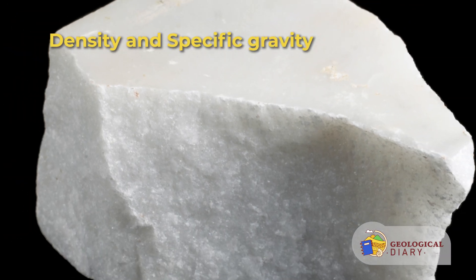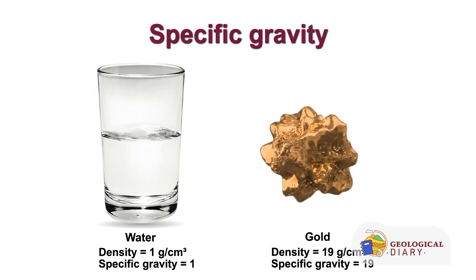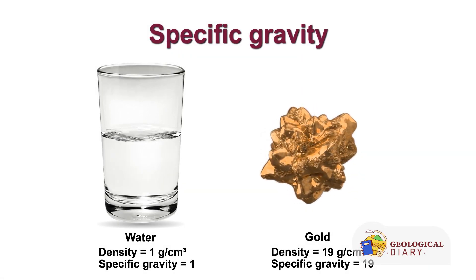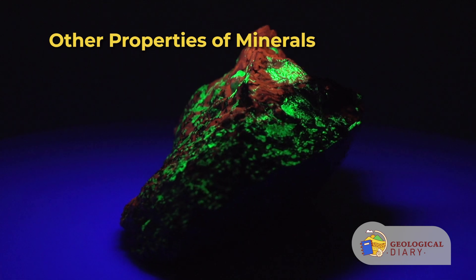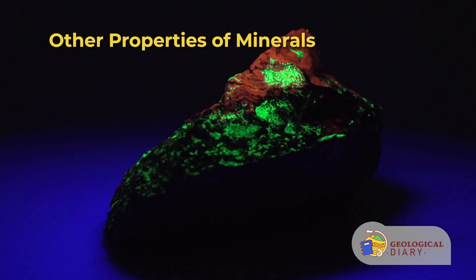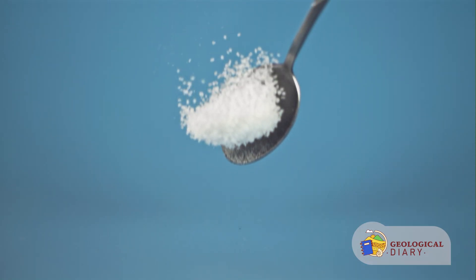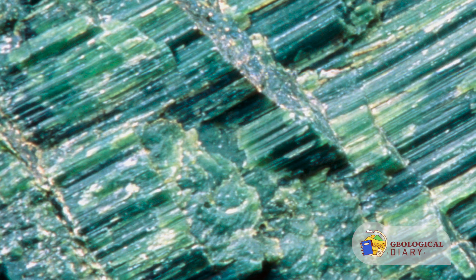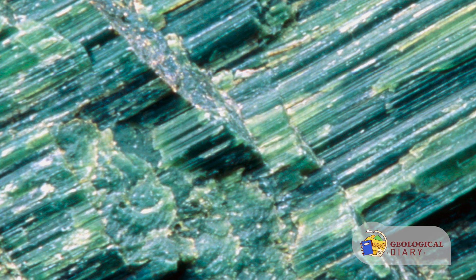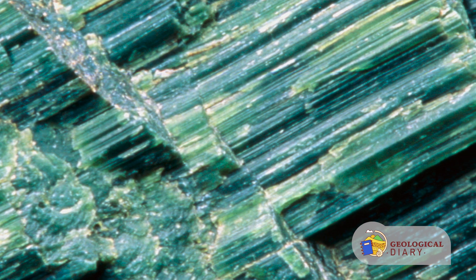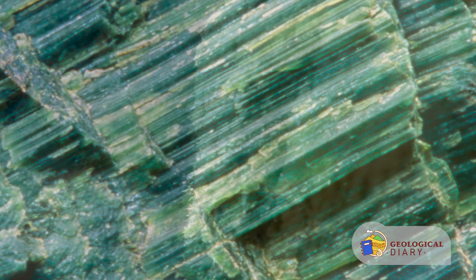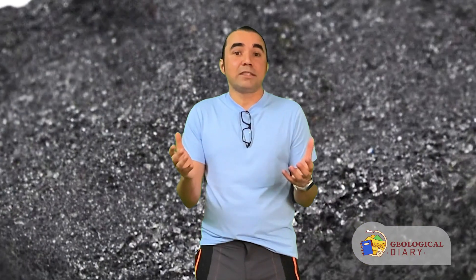Specific gravity is a dimensionless number unique for each mineral — it represents the ratio of a mineral's weight to the weight of an equal volume of water. Some minerals can also be recognized by other unique characteristics: halite (ordinary table salt) can be identified through taste; talc feels soapy and graphite feels greasy; sulfur-bearing minerals can be recognized because they smell really bad. Magnetite has a high iron content and can be picked up with a magnet — some varieties of magnetite actually behave as natural magnets.